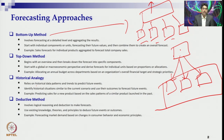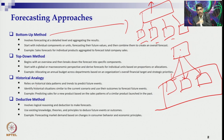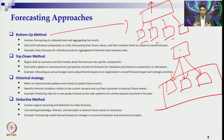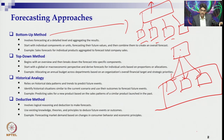In the deductive method, you don't rely on data — it is the opposite of historical analogy. Experts feel that whatever happened in the past may not recur in a new project, product line, location, or prediction. Based on experience, current market needs, and knowledge of forecasting principles, you make predictions based on expert opinion rather than past data.